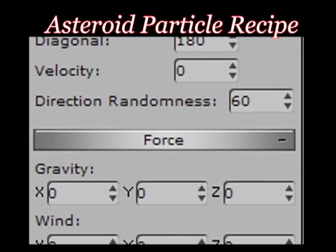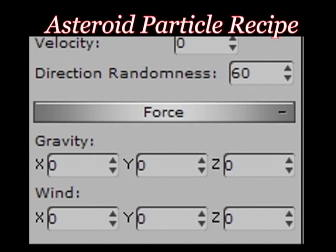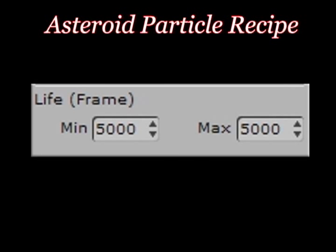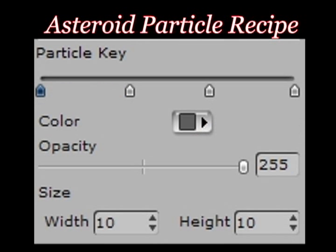Gravity and wind should be set to zero. For the life frame setting, you must not let the particles die or the paint will disappear — set the life value to something larger than your animation length. Because we want a uniform look to the asteroid's particles, set each of the particle keys to the same color, opacity, and size.